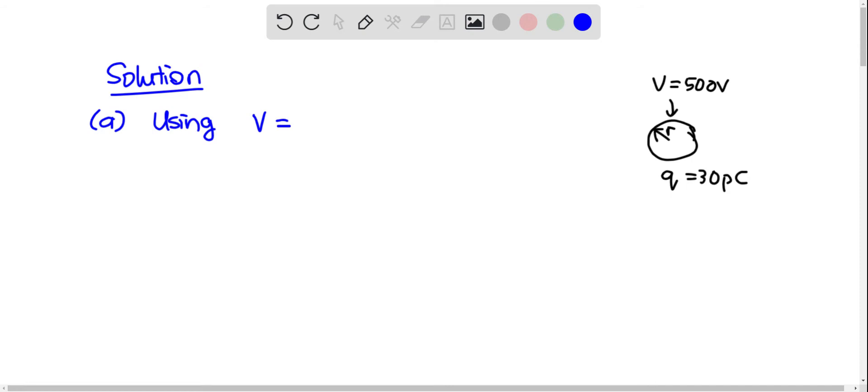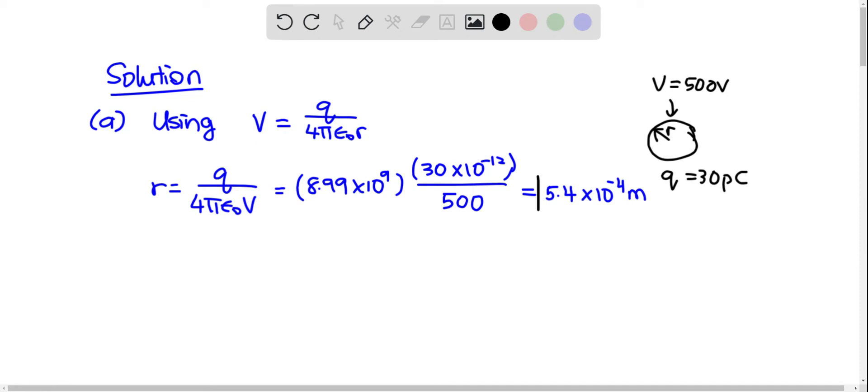We'll be using V equals Q over 4 pi epsilon r. So r would just be Q over 4 pi epsilon V. 1 over 4 pi epsilon is 8.99 times 10 to the 9 and Q is 30 times 10 to the negative 12. V is 500 and r is 5.4 times 10 to the negative 4 meters. So this is the answer for part A.